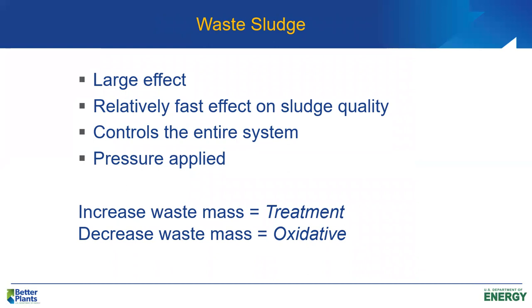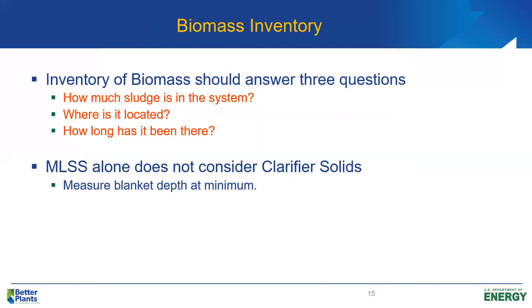We use waste sludge as our primary control mechanism and use it to apply pressure to the process. We can apply a treatment pressure by increasing the amount of waste mass — this makes more food available to each microorganism so they grow faster, and the sludge tends to be under-oxidized. On the other hand, if we decrease the waste mass, that is an oxidative pressure — we tend to have a lower F/M ratio, less food for each bacterium, and the sludge tends to be over-oxidized. We may need to apply either type of pressure depending on how our process is operating.